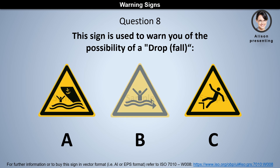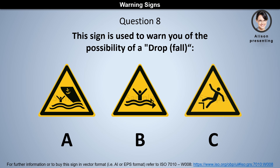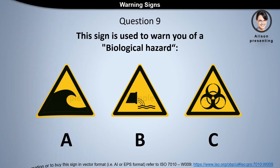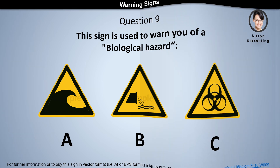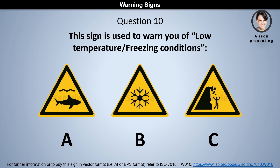Question 8: This sign is used to warn you of the possibility of a drop or fall. Is it a, b, or c? The answer is c. Question 9: This sign is used to warn you of a biological hazard. Is it a, b, or c? The answer is c.